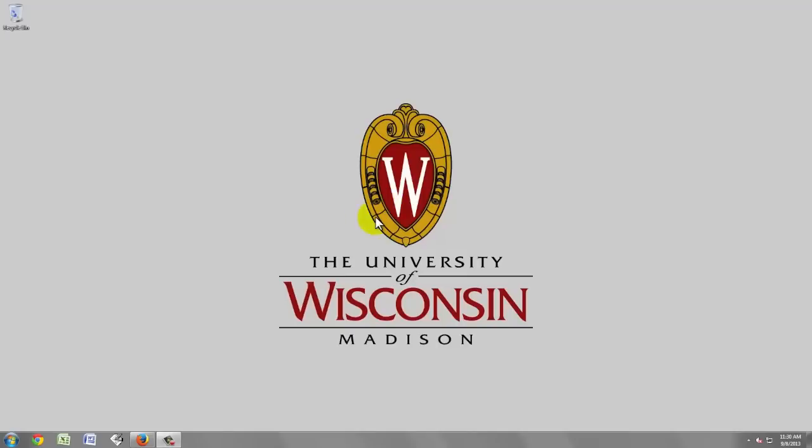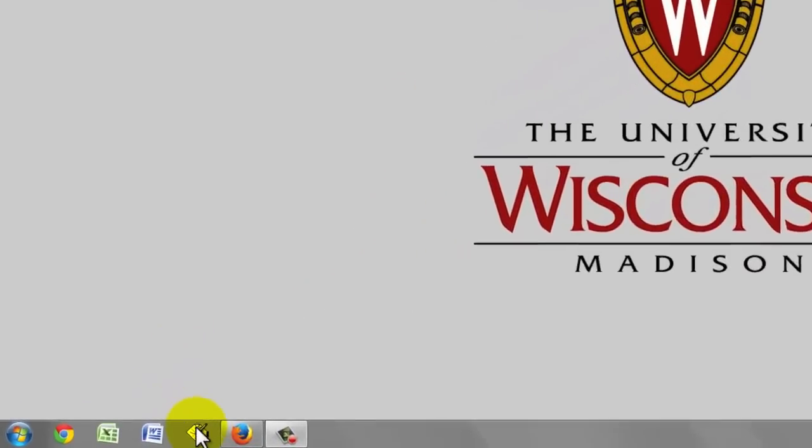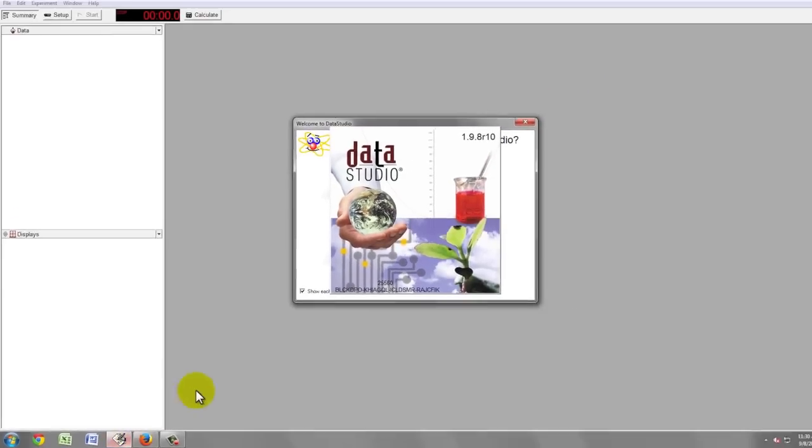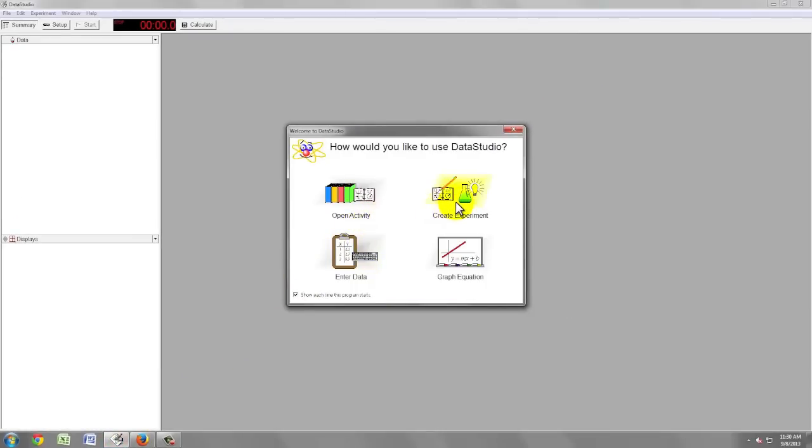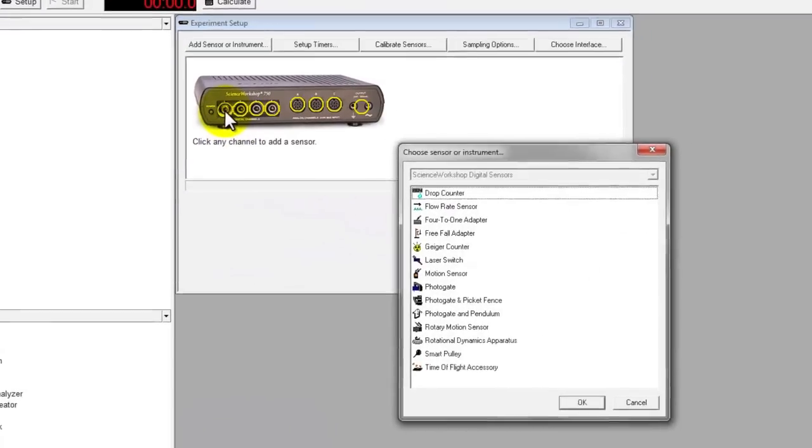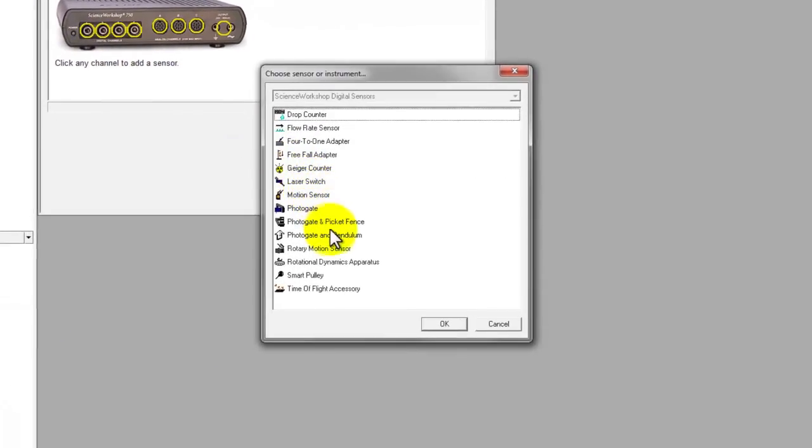Now that the photogate is on and connected, we can move on to create an experiment using Data Studio. Click on the Data Studio icon on the task bar to launch Data Studio and select create an experiment. After that, choose channel one and set the sensor type to photogate and pendulum.